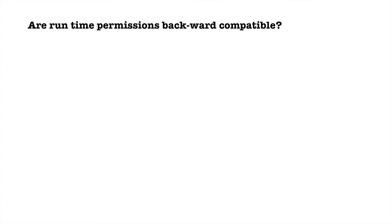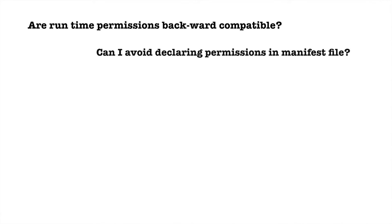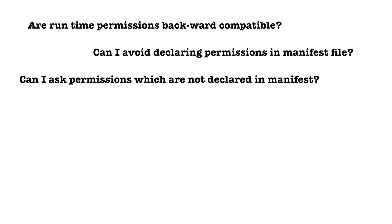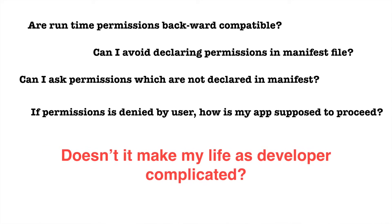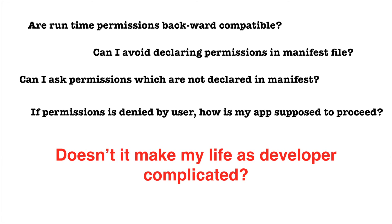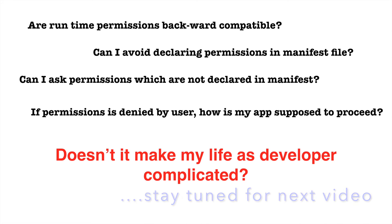After hearing this, probably your mind is buzzing with questions like: are runtime permissions backward compatible? Can I avoid declaring permissions in the manifest file or completely rely on runtime permissions? Can I ask for permissions which are not declared in the manifest file? If a permission is denied by the user, how is my app supposed to proceed? And last but not the least, is runtime permission going to make life as a developer more complicated? I am going to answer these questions and many more, and also show you how to implement runtime permissions in an Android application post Lollipop.